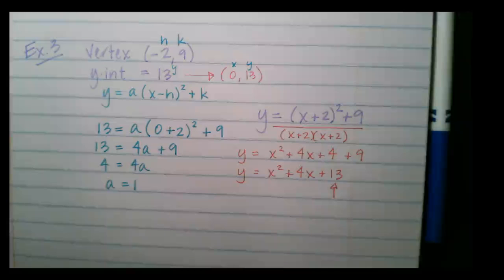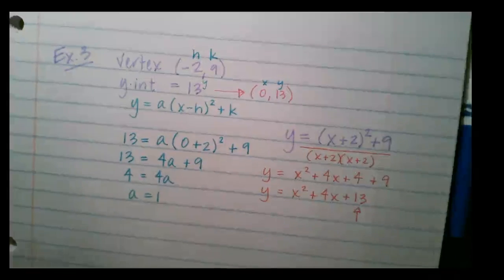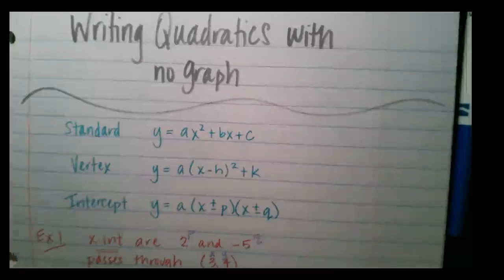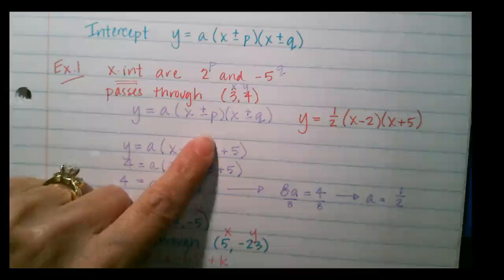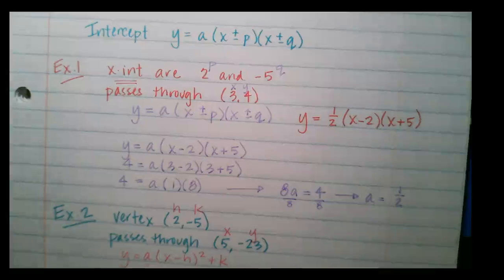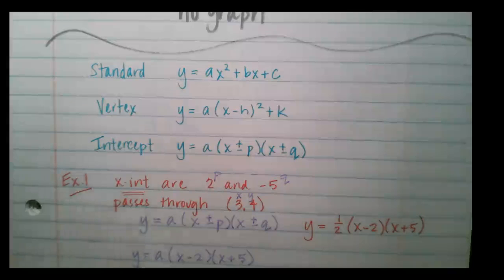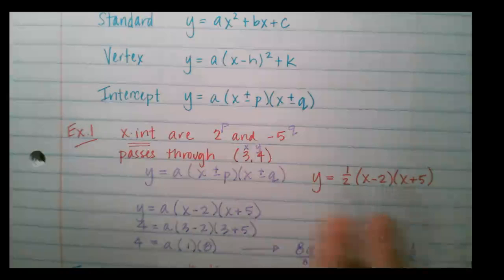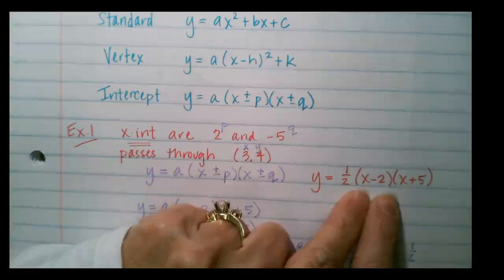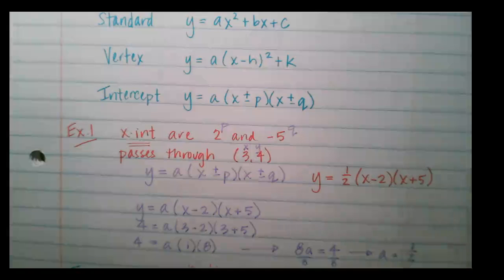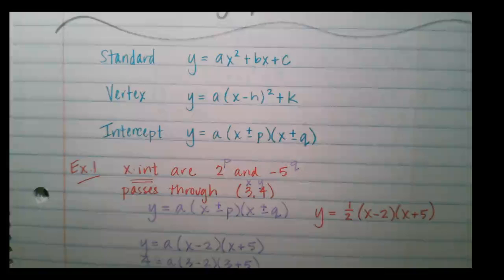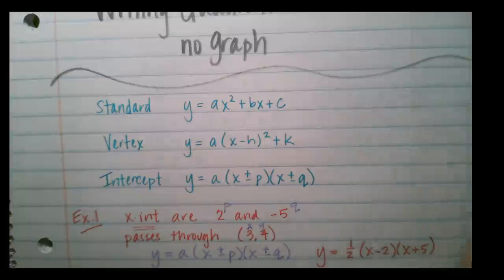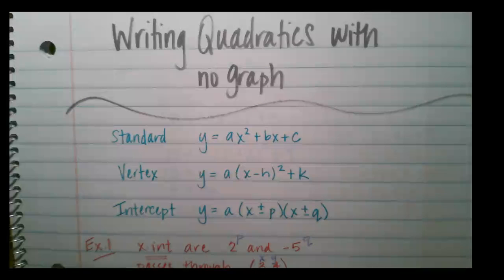So the bottom line is we have three forms to work with. Start with the form based on the information given: if you're given the vertex, use vertex form; if you're given the x-intercepts, use intercept form. Also pay attention to what form the answer should be in — if standard form is required, use the appropriate starting form and then convert.